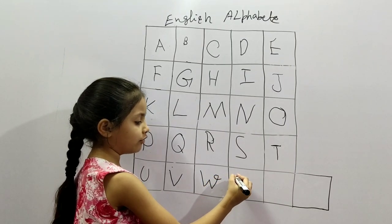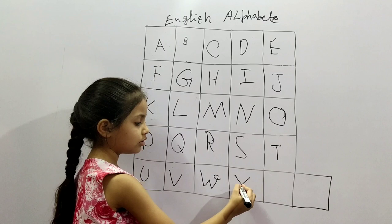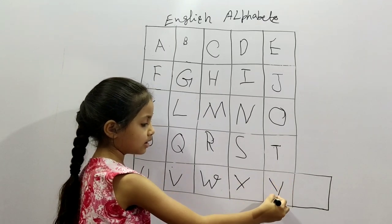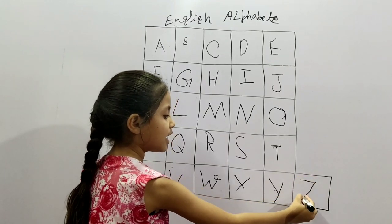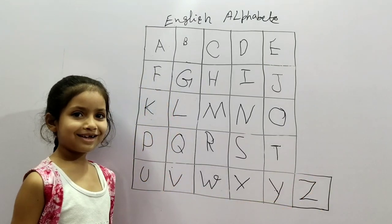X for xylophone, Y for young, Z for zebra.